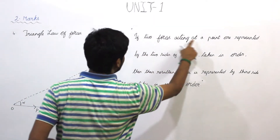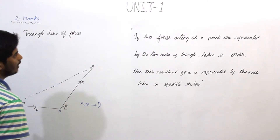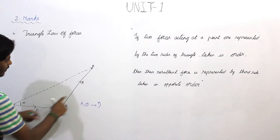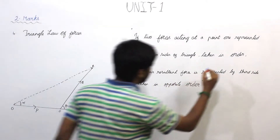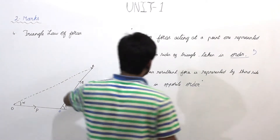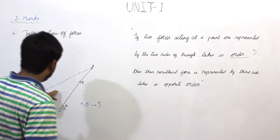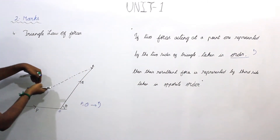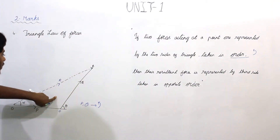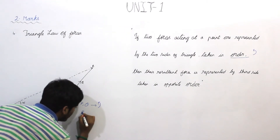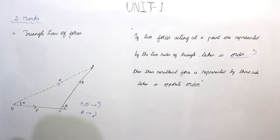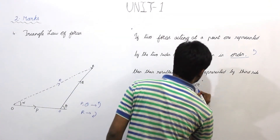Two forces acting at a point are represented by two sides of a triangle, taken in order — this order is anticlockwise. Then the resultant force is represented by the third side of the triangle, taken in opposite order. So R should be clockwise; opposite order refers to clockwise.